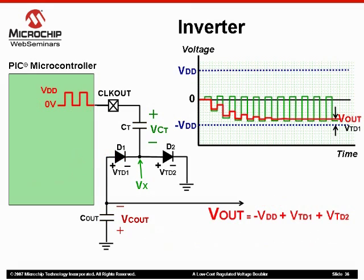As the clock output of the microcontroller continues, the capacitors will continue to average the voltage supplied added to the previous charge across them. Eventually, the output voltage will settle to a value equal to a negative of whatever the amplitude of our clock signal is, plus whatever the threshold voltages are of the diodes.